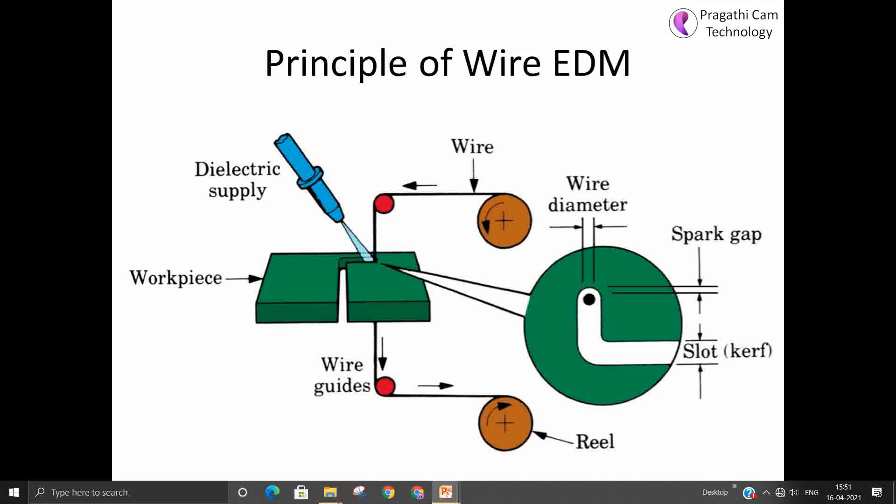Here the workpiece is the part material to be cut. So this workpiece should be a conductor of electricity. If non-conducting material, it is not possible to cut in the wire EDM. This is the drawback of wire cutting principle. Non-conducting material like stone, wood, these things you cannot cut using wire EDM or wire cutting methods.